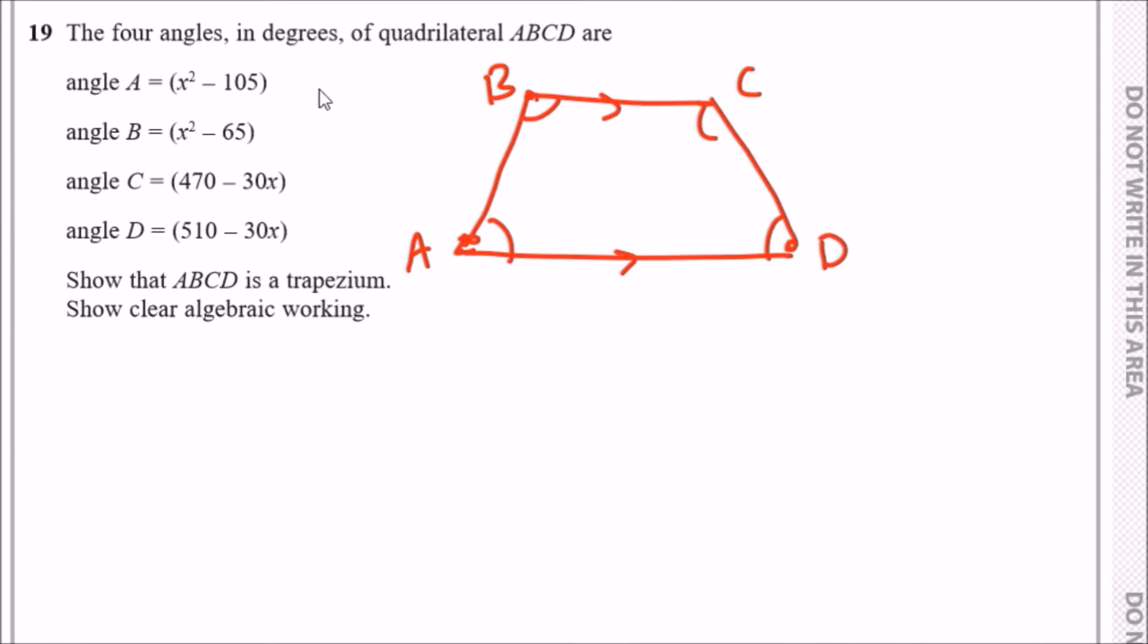The problem states that the four angles in degrees of a quadrilateral ABCD are given, and we need to show that ABCD is a trapezium. I've already sketched it here to speed things up.